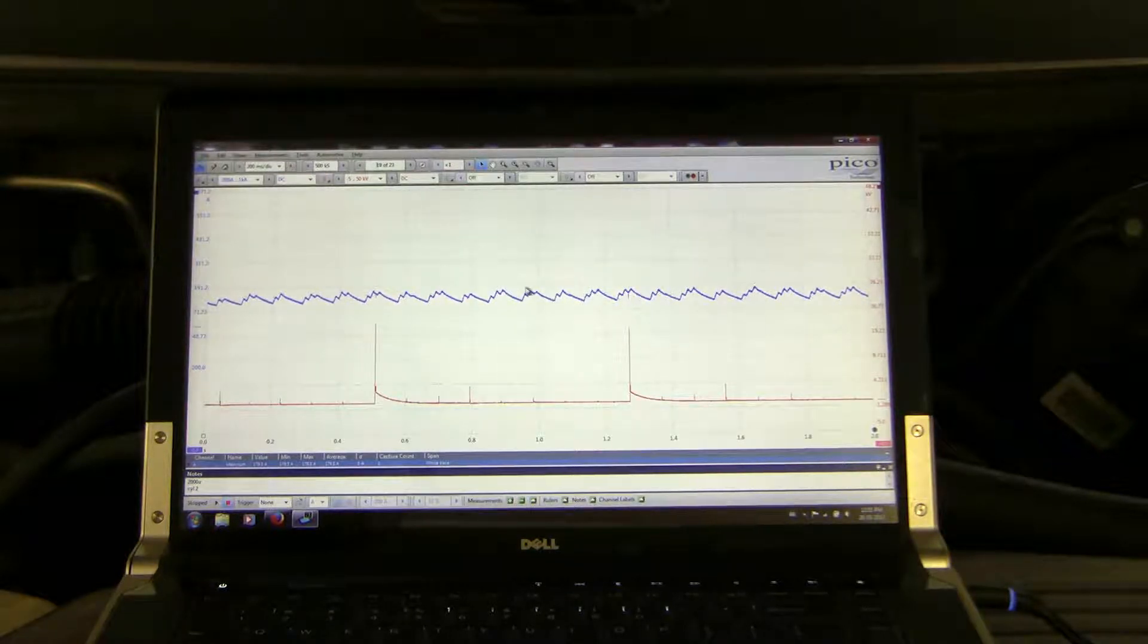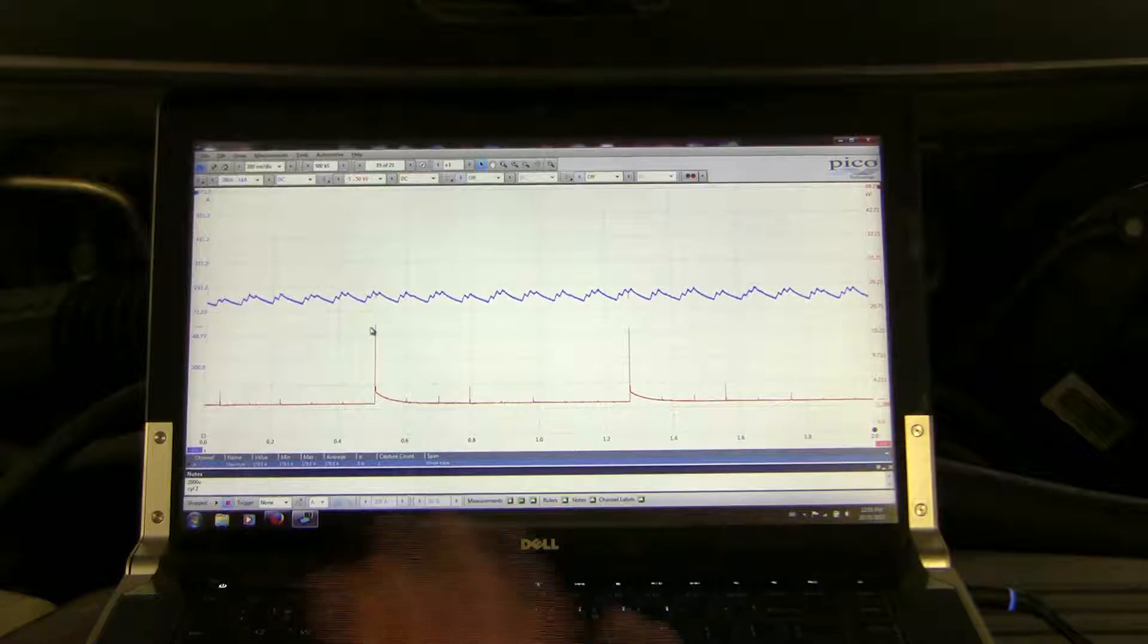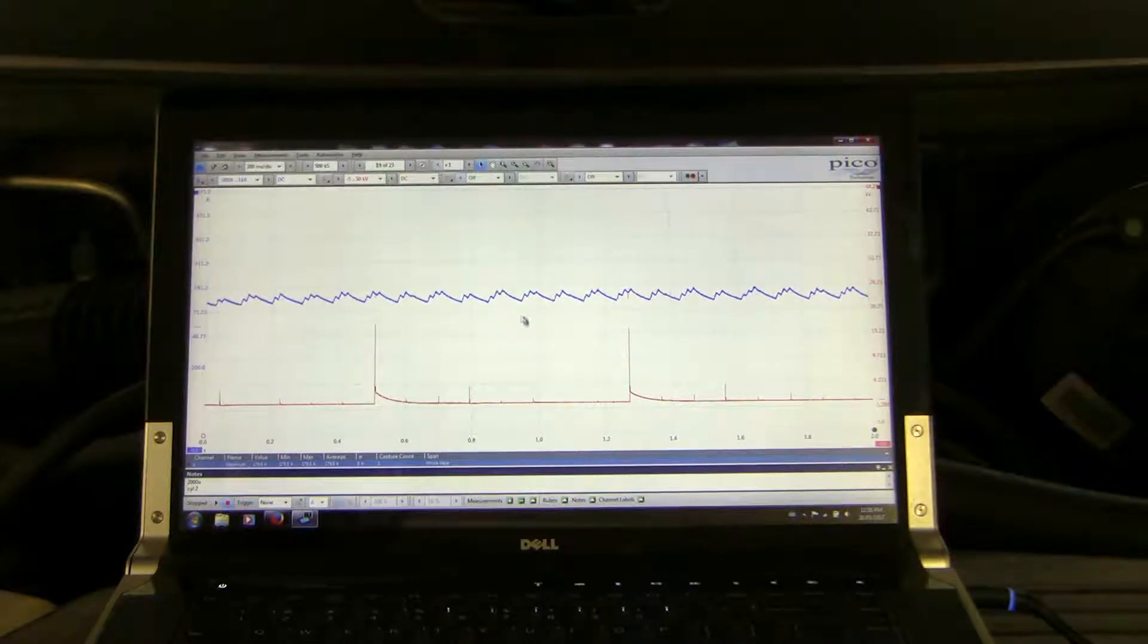And so on a general basis this test has passed. You can see the spikes from cylinder number two. There's one right there and there's one right there. And so let's print this out and we'll spend a bit more time discussing which cylinder is responsible for which hump here.